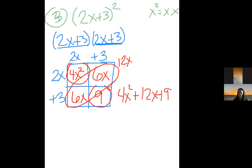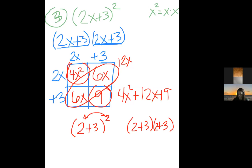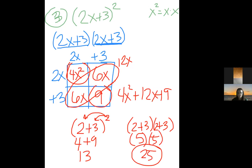To show why distributing the exponent won't work, take 2 and 3. If you distribute the square: 2² + 3² = 4 + 9 = 13. But if you do it correctly — (2+3)(2+3) = 5×5 = 25. Those are different answers. You cannot distribute an exponent when there's a plus sign. With multiplication you can use the power rule, but addition doesn't hold that property.